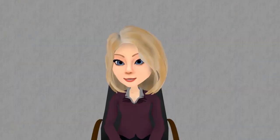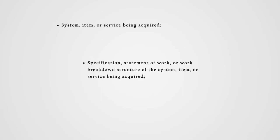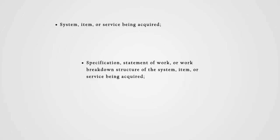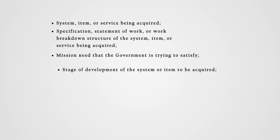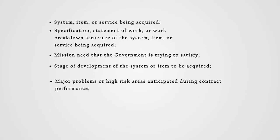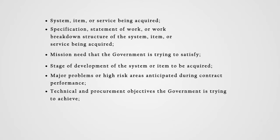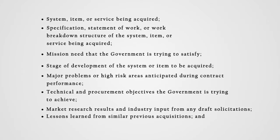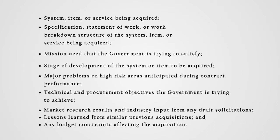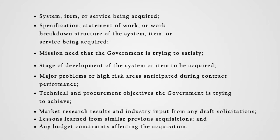This team of individuals should invest time up front to gain a basic understanding of some primary considerations such as: the system, item, or service being acquired; the specification, statement of work, or work breakdown structure; the mission need that the government is trying to satisfy; the stage of development of the system or item to be acquired; the major problems or high-risk areas anticipated during contract performance; the technical and procurement objectives the government is trying to achieve; market research results and industry input from any draft solicitations; lessons learned from similar previous acquisitions; and any budget constraints affecting the acquisition. These are the type of considerations that should be most helpful in deciding what subject matter areas will be the best discriminators.